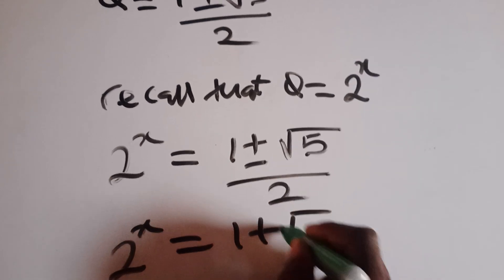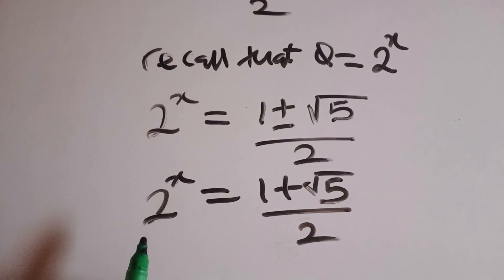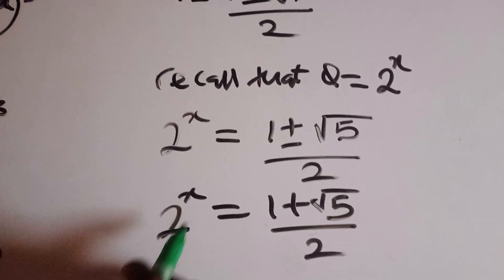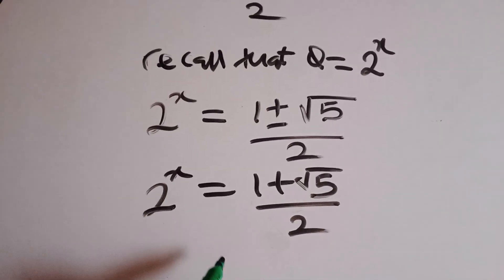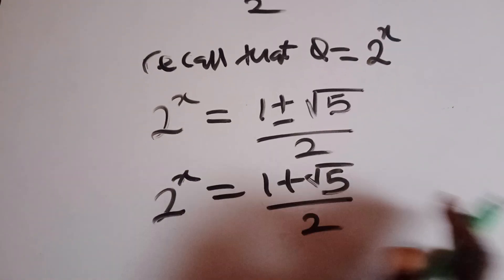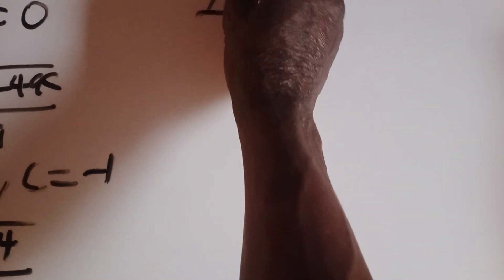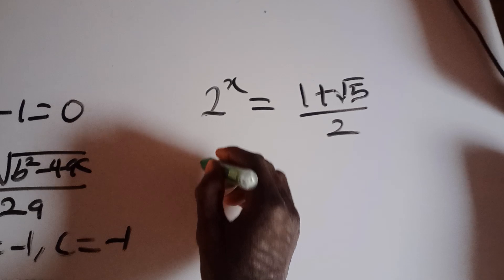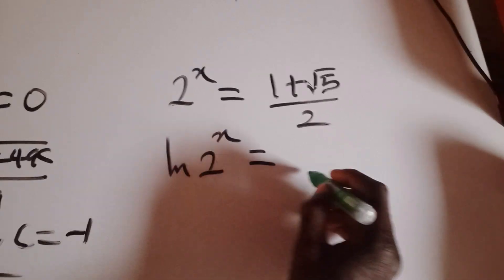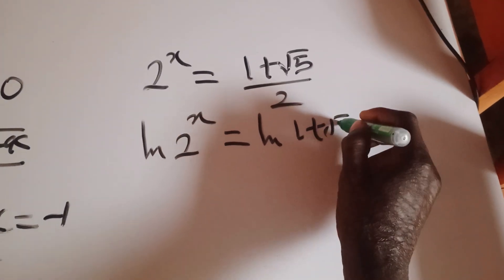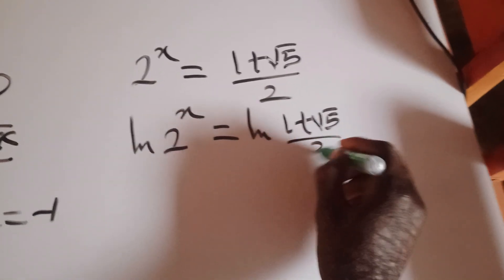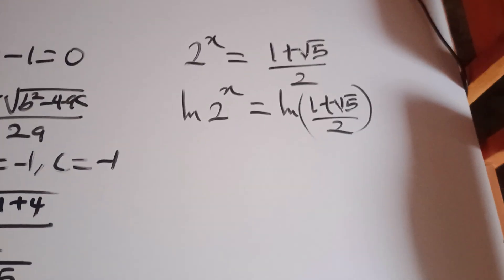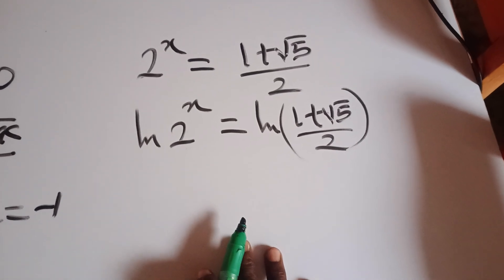We are asked to find the value of x, not just 2 to the power x. So I'll apply the natural logarithm to both the left and right sides. We have ln(2 to the power x) equals ln((1 plus square root of 5) divided by 2). Recall the logarithm rule: if you have ln(a raised to power b), it can be written as b times ln(a).